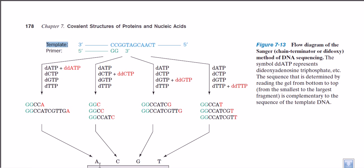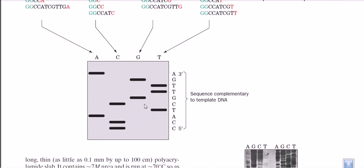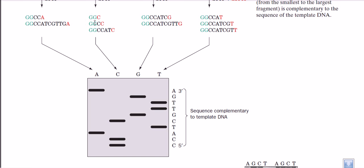We then take all these fragments and load them on a gel. We have four wells on the gel: fragments from test tube 1 (ddATP) go into well A, from test tube 2 (ddCTP) into well C, from test tube 3 (ddGTP) into well G, and from test tube 4 (ddTTP) into well T. We then run the gel electrophoresis.